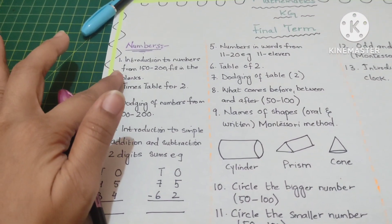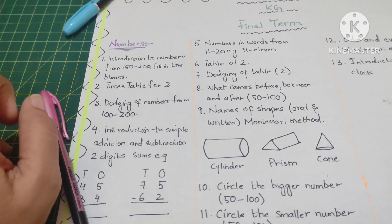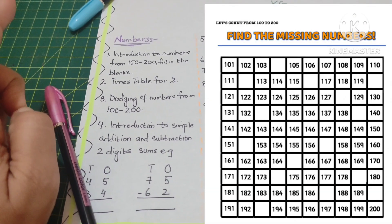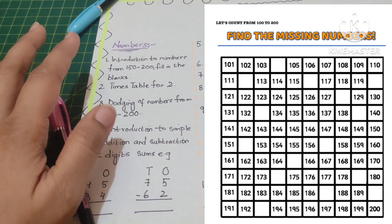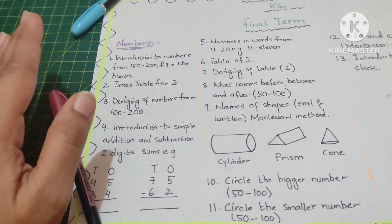For the final term, introduction to numbers from 150 till 200 will be given in the form of blanks. Each missing number will be given and the child has to make sure that he is writing in sequence.